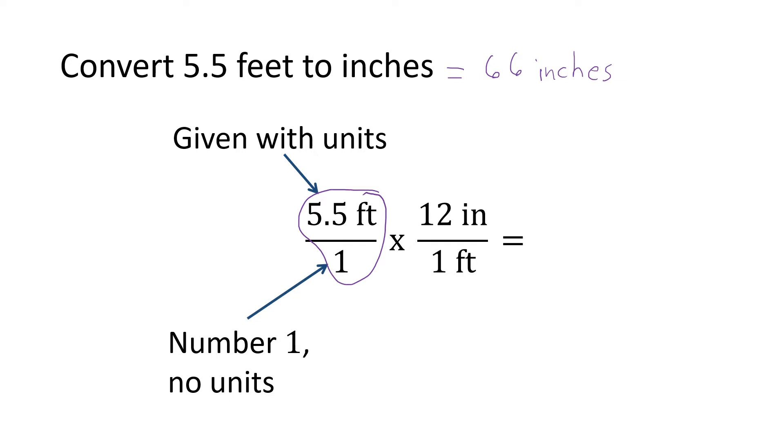Up in the top we're putting the number we're given, which is the 5.5, and its unit, which is feet. Now we're going to multiply that by a conversion factor. The conversion factor is a fraction where whatever is in the top and whatever is in the bottom are equivalent ways of expressing the same quantity. So for instance, if you were to take a standard ruler that's one foot long, it's also marked as 12 inches so that the length represented by that ruler could be written either as 12 inches or as one foot.